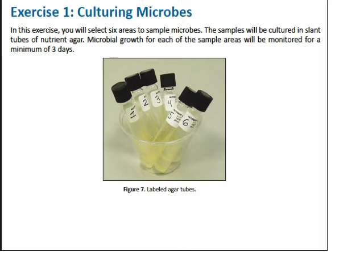In our first experiment we're going to culture microbes. We'll select six areas to sample microbes. The samples will be cultured in slant tubes of nutrient agar, and microbial growth for each sample area will be monitored for three days. Choose six places to swab for microbes and record a description of each location in Data Table 1 of your lab report assistant. Microbial growth often occurs on surfaces regularly exposed to human hands like TV remotes, light switches, doorknobs, etc. Do not take cultures from people or animals as these might have a potential to be pathogenic. Use the permanent marker to label the six sterile slant tubes of agar 1 through 6 as shown in Figure 7. Use an empty 9-ounce plastic cup to hold the agar tubes.